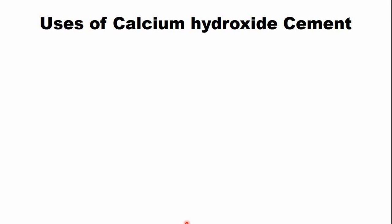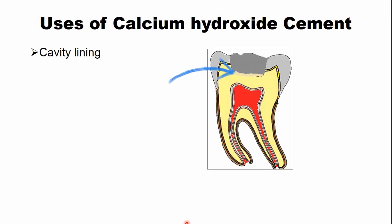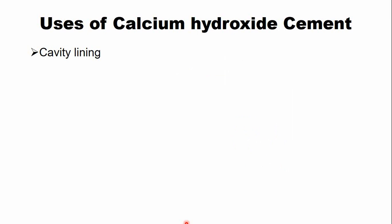The calcium hydroxide dental cement is used as a cavity lining material — under amalgam, metallic restorations, or below acidic restorations. It has a dual benefit: it produces an alkaline environment which provides an antibacterial effect, and it also has an anti-inflammatory effect.